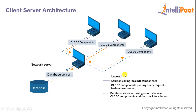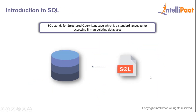Similarly, if there are three users sending the same request, the database server will process all three requests simultaneously and send back the result to all three systems. So that was about the types of database architecture.